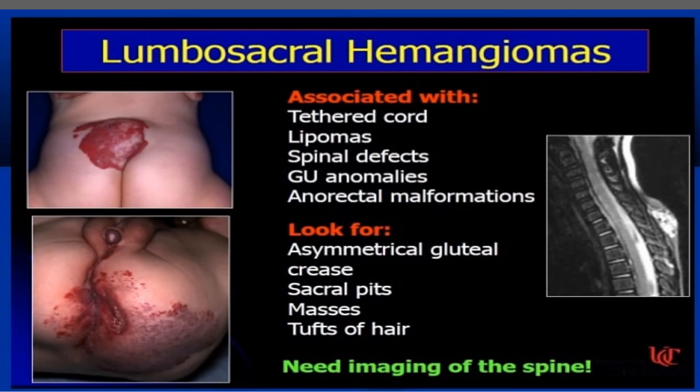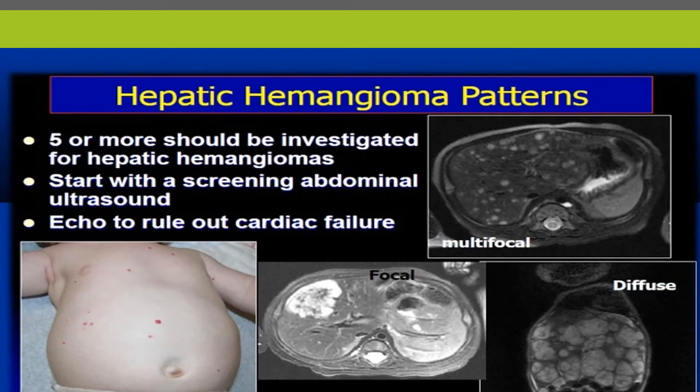Lumbosacral hemangioma is associated with tethered cord, lipoma, spinal defects, genitourinary anomalies, and anorectal malformations. We should look for asymmetrical gluteal cleft, any crease anomalies, sacral pits, masses, and tufts of hair. Most of the time imaging of the spine is not needed, but in certain cases it should be performed.